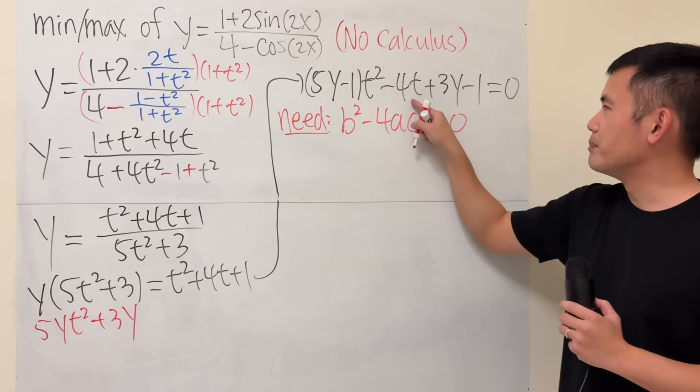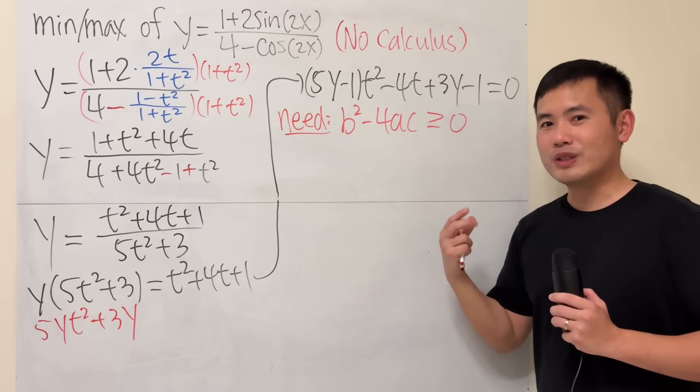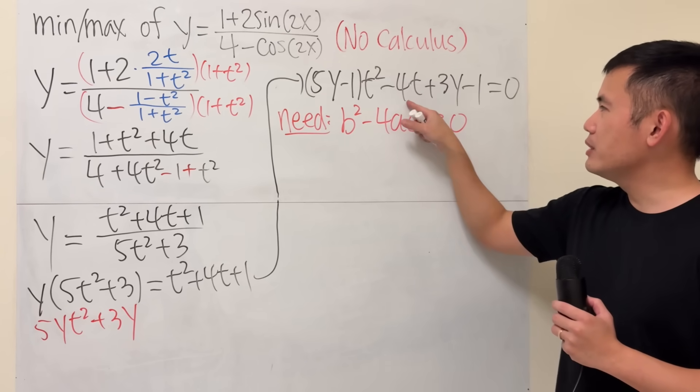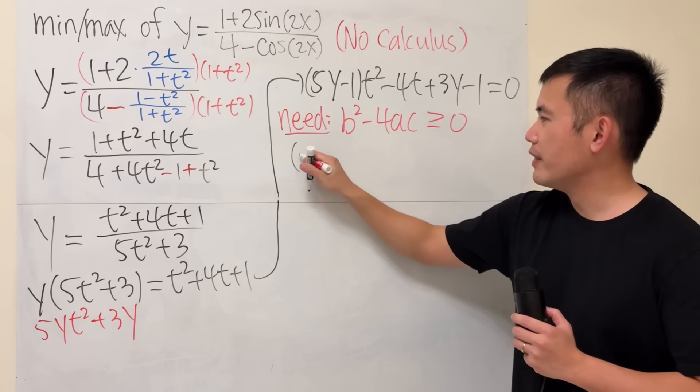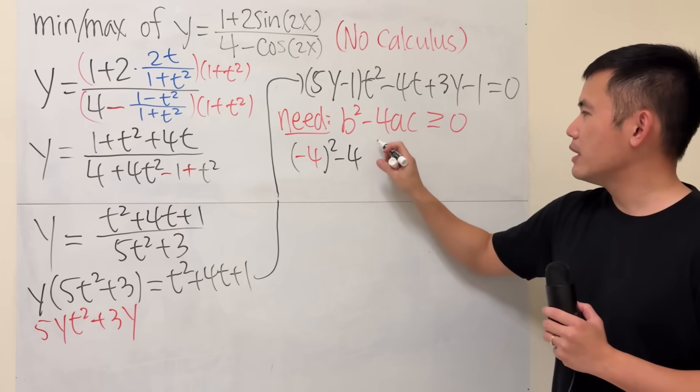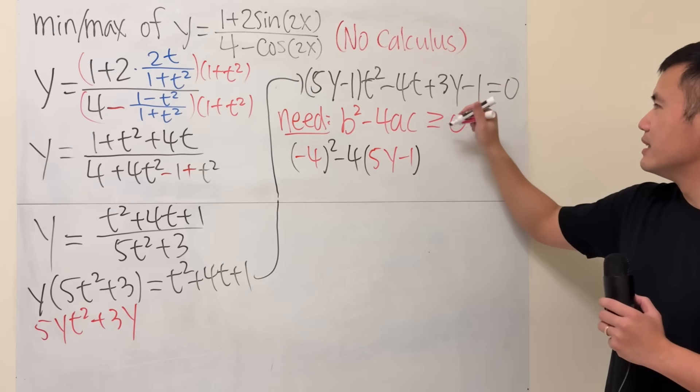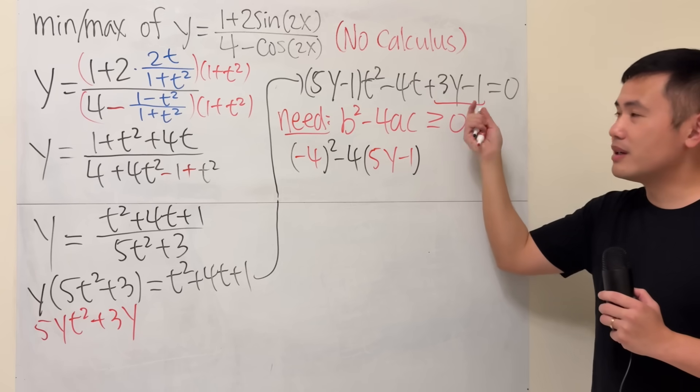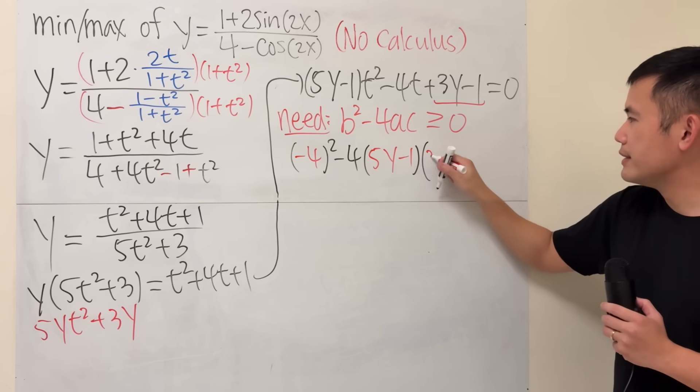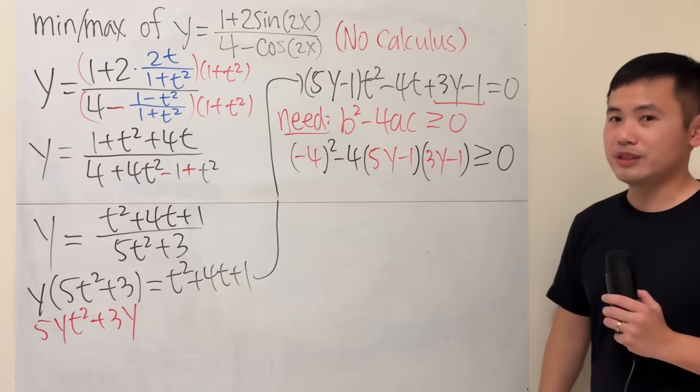Here is the a, here is the b, and here is the c. Now, we can set up an inequality with y, and then we have the condition for y. So, for b squared, put this, square that, so that's negative 4 squared, minus 4, a is that, which is 5y minus 1, c is this, because this right here is the constant term in the t world. So, multiply by 3y minus 1. Now, all that has to be greater than or equal to 0.